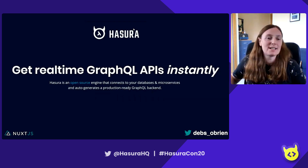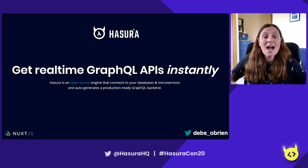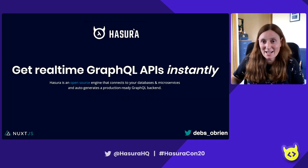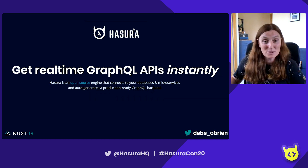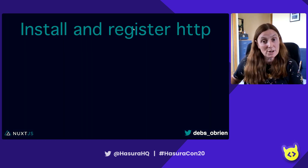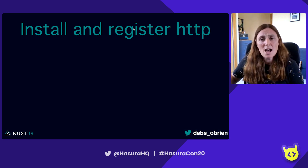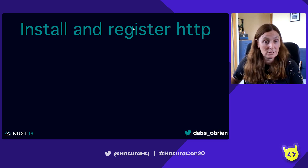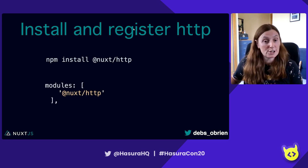So I'm going to show you how to put Hasura into Nuxt, which is really easy. I'm using the HTTP module - you could use Apollo, but that's a lot heavier. So I'm using a lighter version, just the HTTP module. First you install it: npm install nuxt HTTP. Then in your Nuxt config you register the module so you can use it across your application.